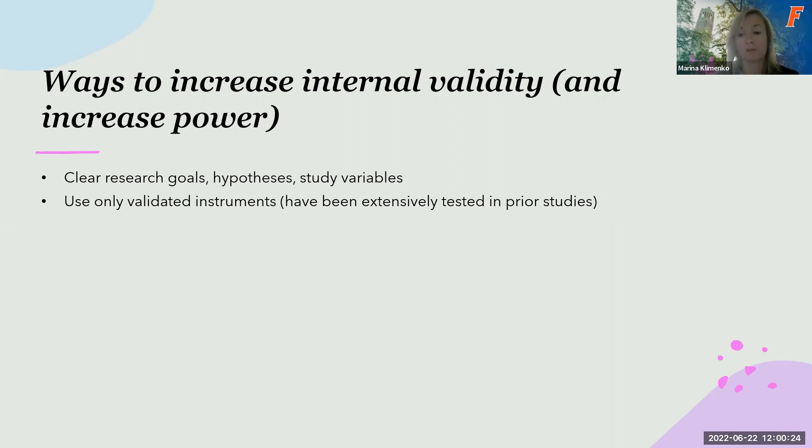Once you identify what variables you need to measure, then the important step is to choose appropriate and validated survey instruments to measure your variables. Validated instruments are those that have been extensively tested in prior studies. If your measures are not good, then the entire data is not going to have any value. So using validated instruments is extremely important.